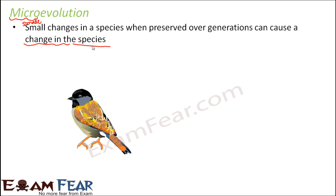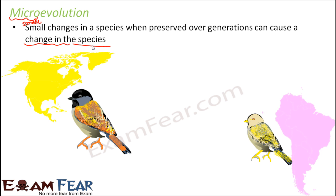Let us take the example of sparrows. Sparrows are found in different parts of the world. It has been observed that the sparrows found in North America and the sparrows found in South America are quite different from each other. The sparrows in North America are larger and darker when compared to the sparrows found in South America.